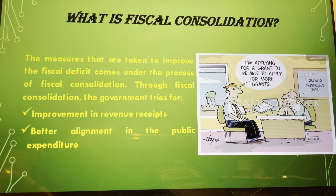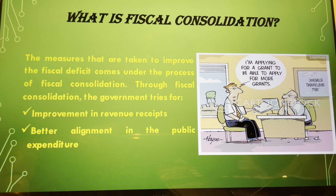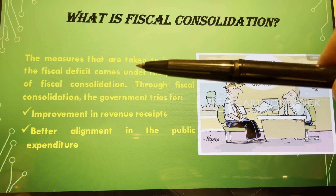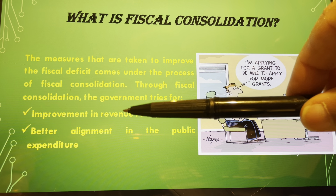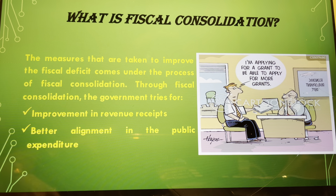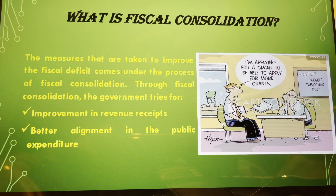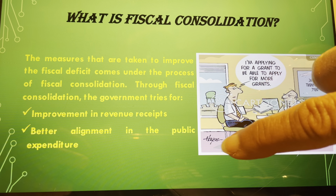Fiscal consolidation refers to the measures taken to improve the fiscal deficit. Through fiscal consolidation, the government tries to improve revenue receipts — collecting more revenue — and achieve better alignment in public expenditure on public goods such as transportation infrastructure and other goods used by all people.